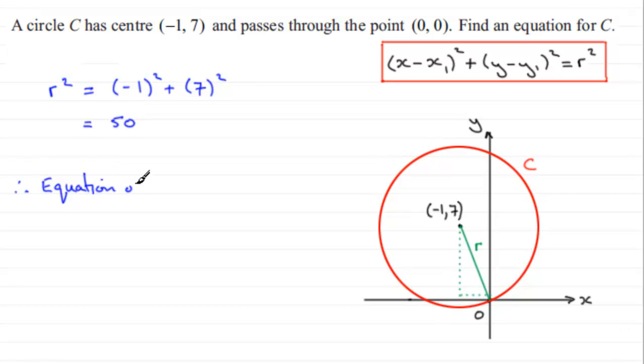Therefore equation of C is essentially, well it's going to be x minus the x coordinate of the center minus minus one all squared plus y minus seven all squared equals the radius squared which we've seen is 50.